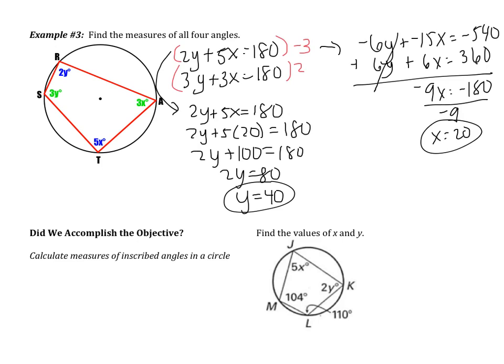Now I am not finished. The question is, find the measures of all four angles. So I'm going to start with angle R. 2 multiplied by Y, 2 multiplied by 40 is going to be 80 degrees. Angle A, 3 multiplied by X, 3 multiplied by 20 is going to be 60 degrees. Angle T, 5X, 5 multiplied by 20 is going to be 100 degrees. And then 3Y, 3 multiplied by 40 is going to be 120. As a mental check, are our opposite angles supplementary? Well, 80 add 100 is 180. 120 add 60 is 180. So my answer checks out.